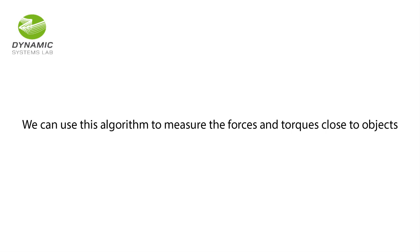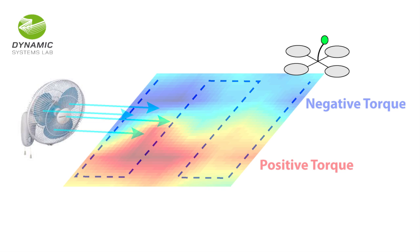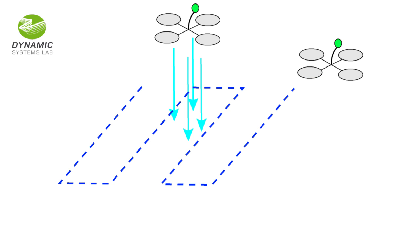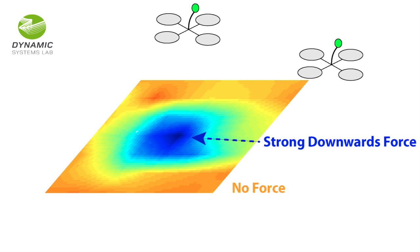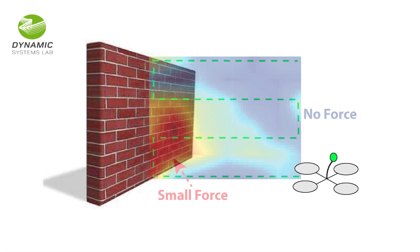We can use this algorithm to measure the forces and torques close to objects, such as the force due to wind in front of a fan, downwash below another quadrotor, and even the tiny aerodynamic forces close to a wall.